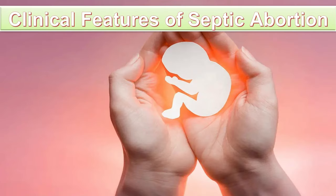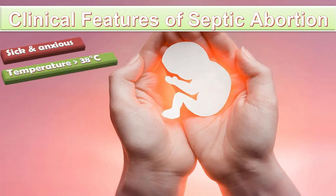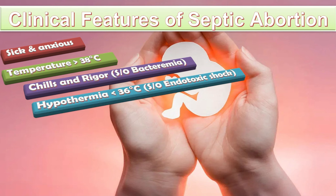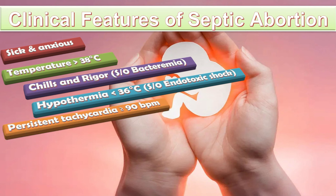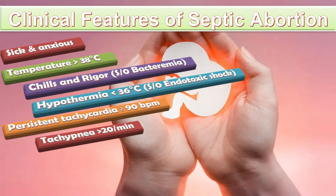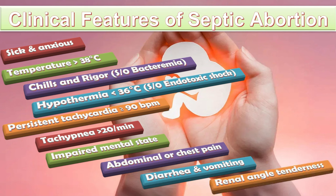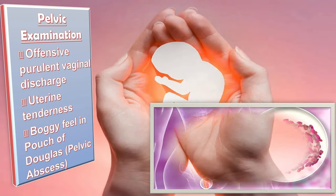Clinical features of septic abortion: the patient may be sick or anxious, with temperature above 38°C. There can be chills and rigors due to bacteremia, or hypothermia below 36°C due to endotoxic shock. Persistent tachycardia above 90 beats per minute or tachypnea above 20 per minute may be present. The patient may also present with impaired mental state, abdominal pain, chest pain, diarrhea, vomiting, or renal angle tenderness.